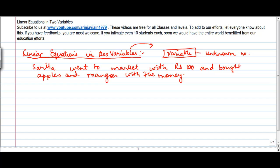So, what we are told is that Sarita had 100 rupees. She had 100 bucks. And she went to the market and bought apples and mangoes and spent rupees 100.